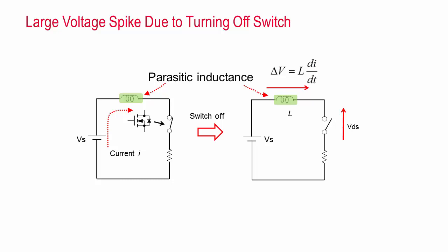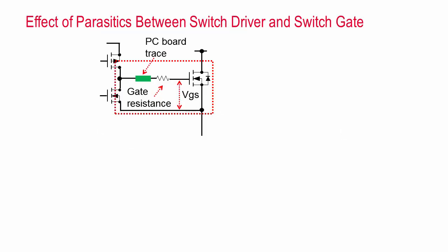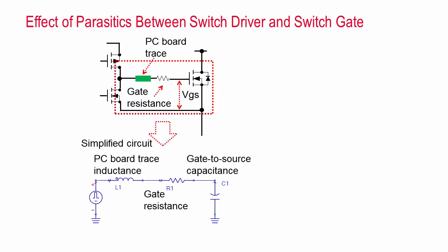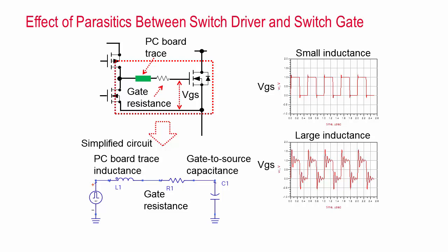Due to the sudden negative change in current through the parasitic inductance, a surge in negative voltage appears across it. VDS equals VS minus delta V. Delta V has a large negative spike, so VDS has a large positive spike. This illustrates how the gate to source voltage at one of the switching FETs can be very different when PC board trace effects are included.